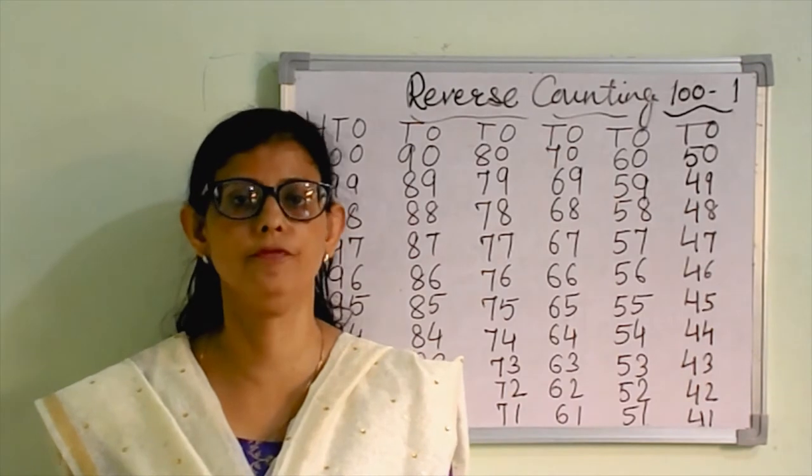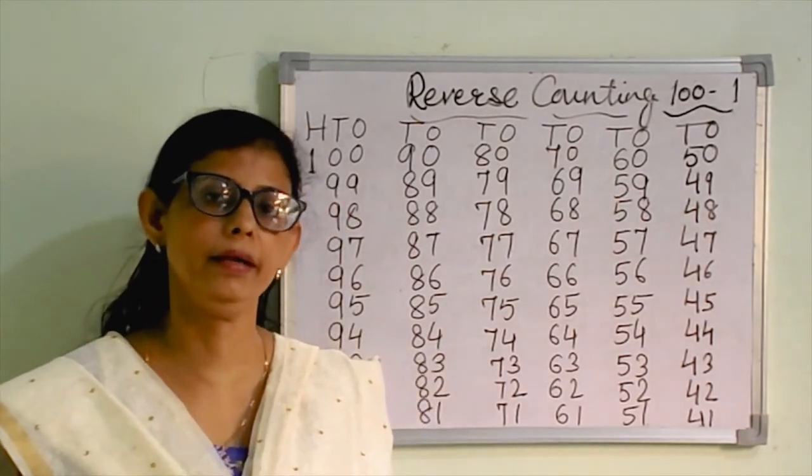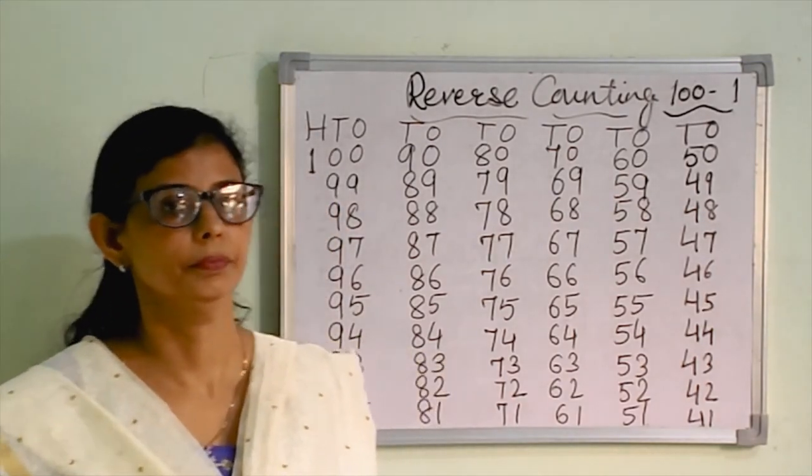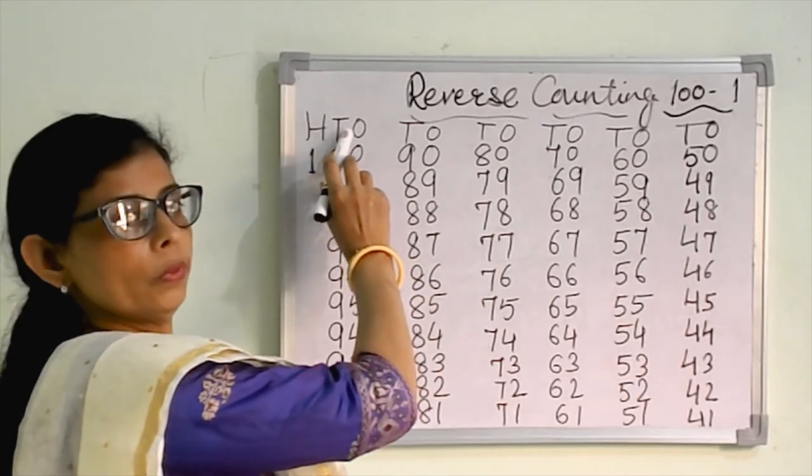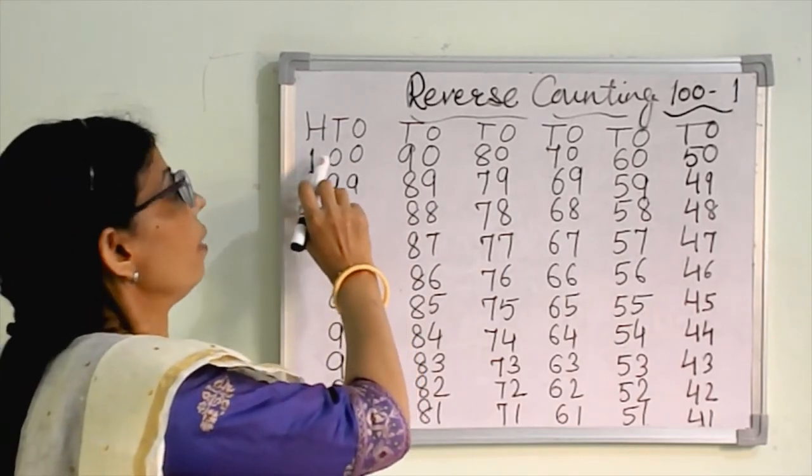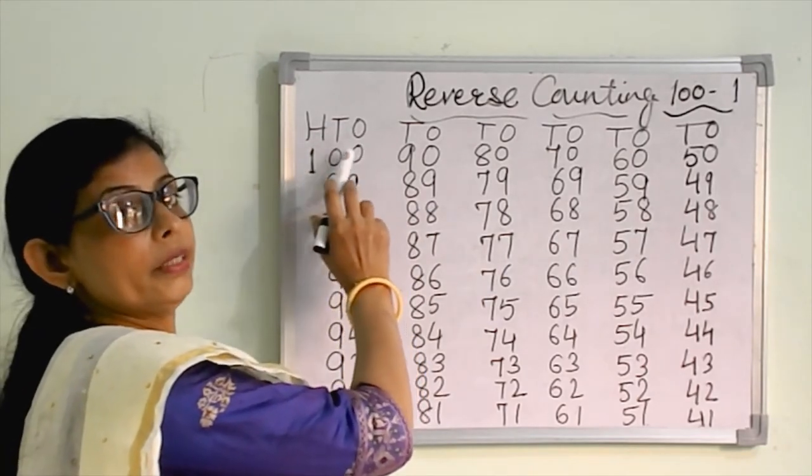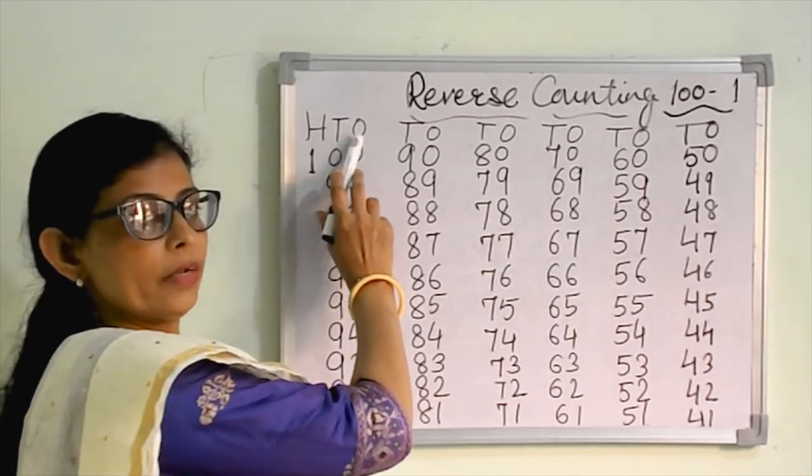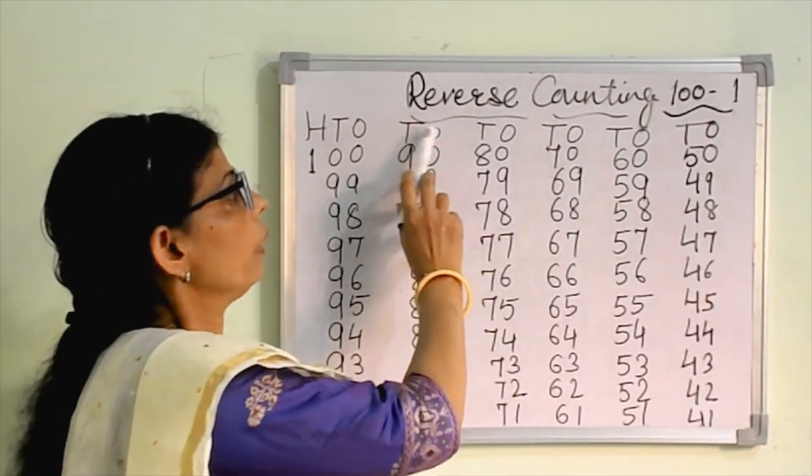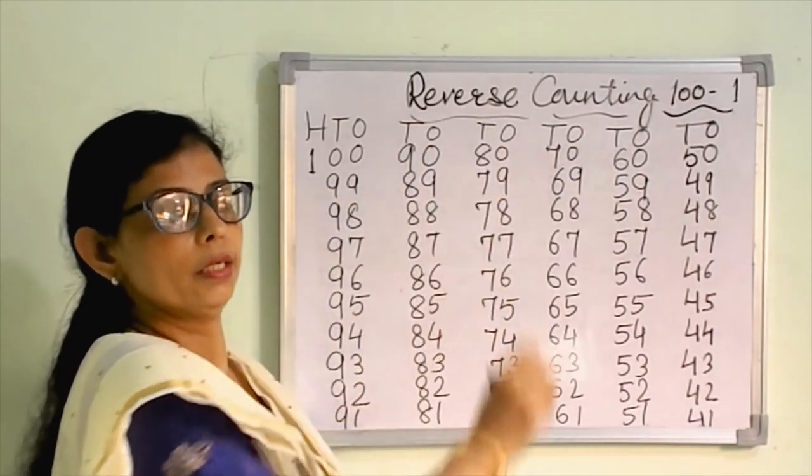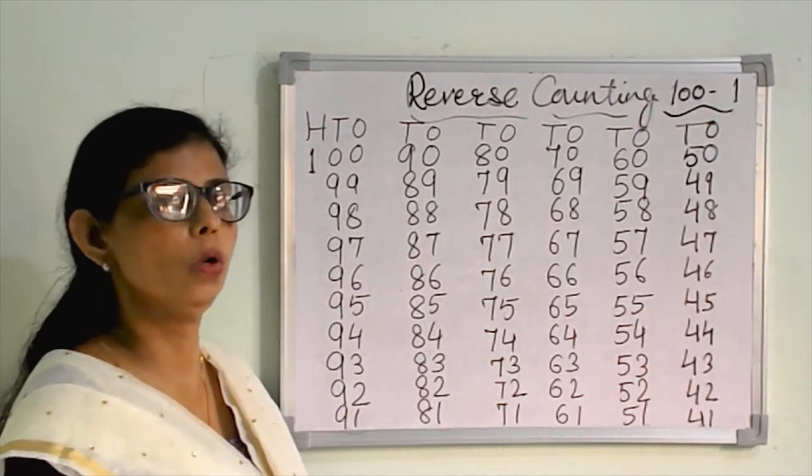So here I have written HTO. The numbers are in three digits, so you have to write here HTO: hundreds, tens and ones. And left of the numbers are TO: tens and ones. We start from 100, one zero zero, hundred.